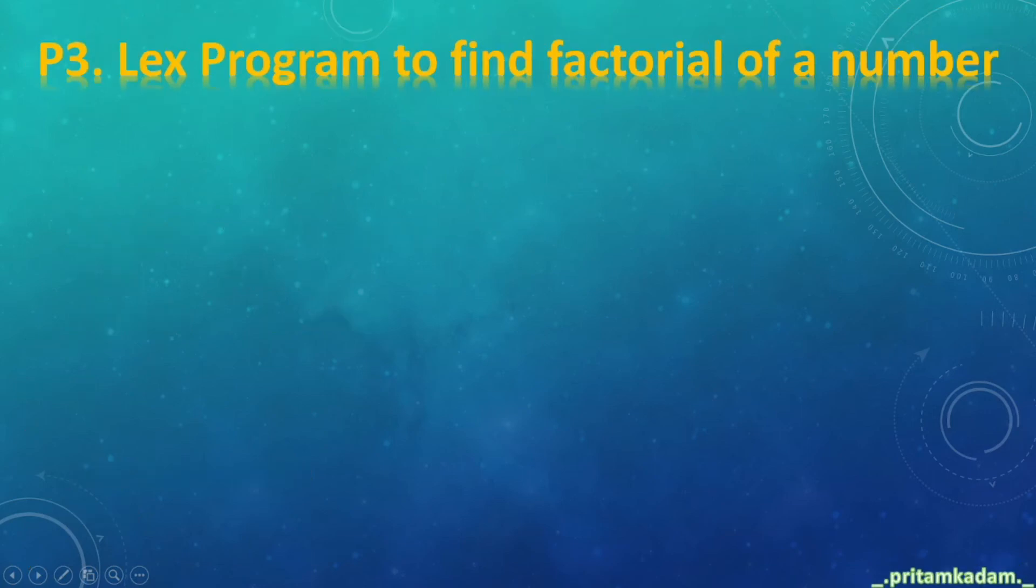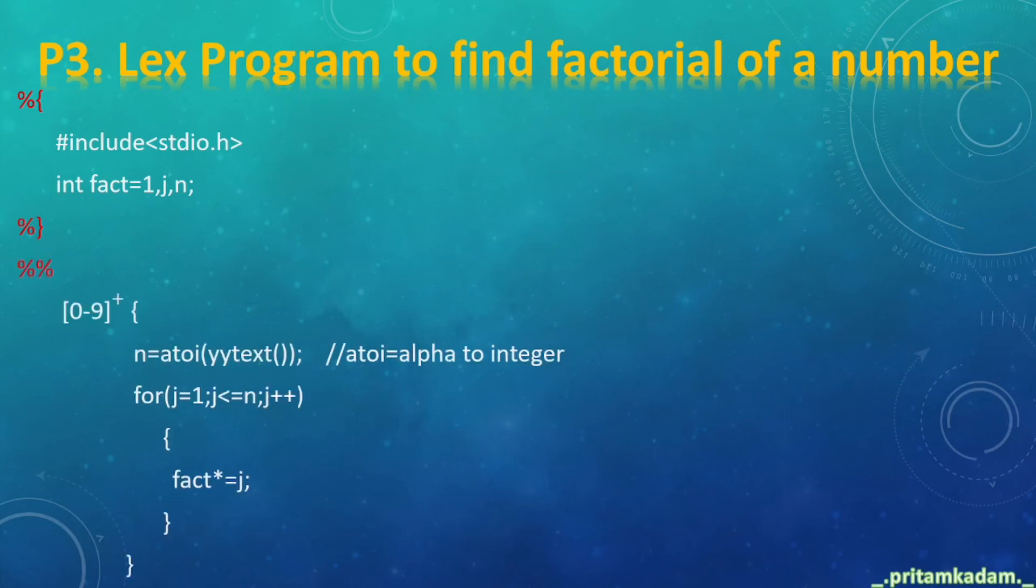Now let's write another program and also run it. Lex program to find factorial of a number. The first section: we write #include stdio.h and fact=1, j and n variables to calculate the factorial.